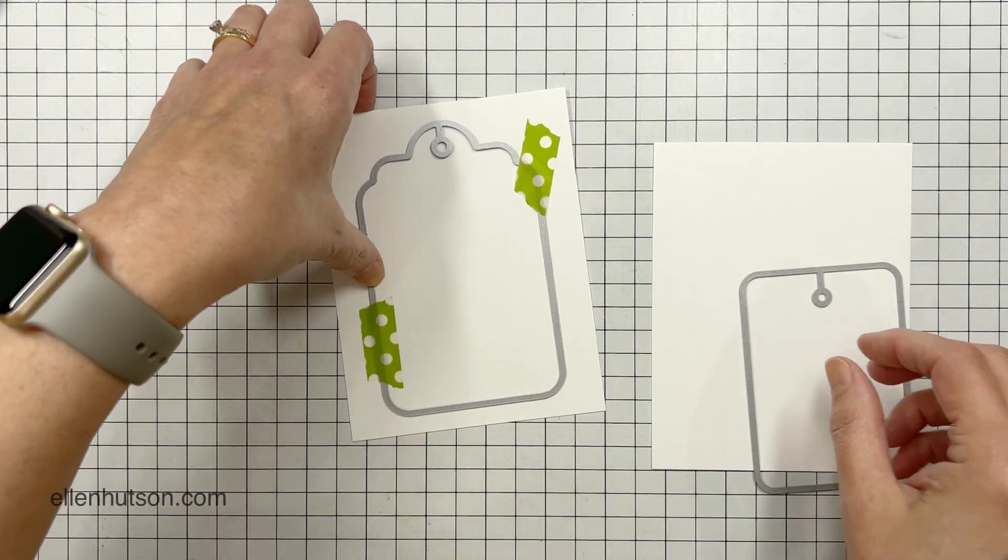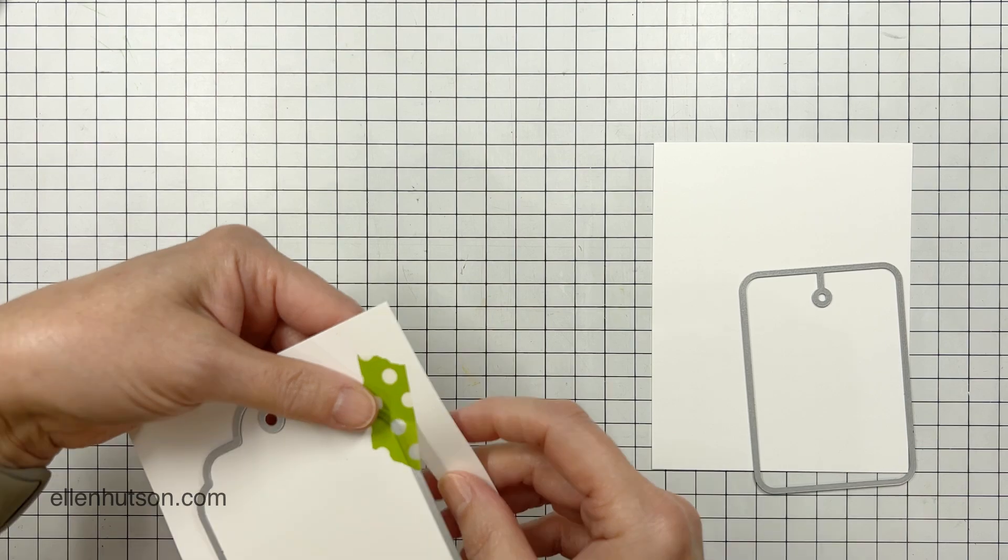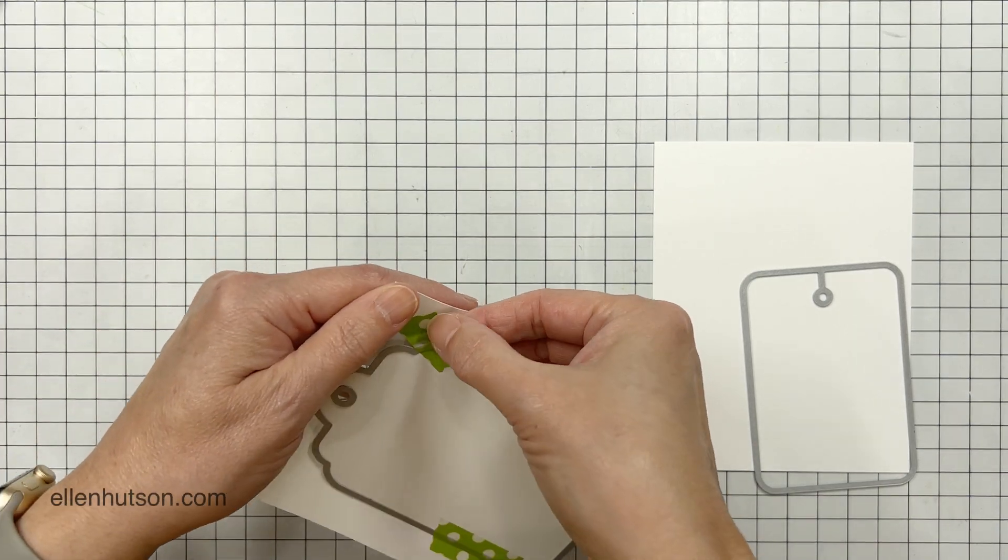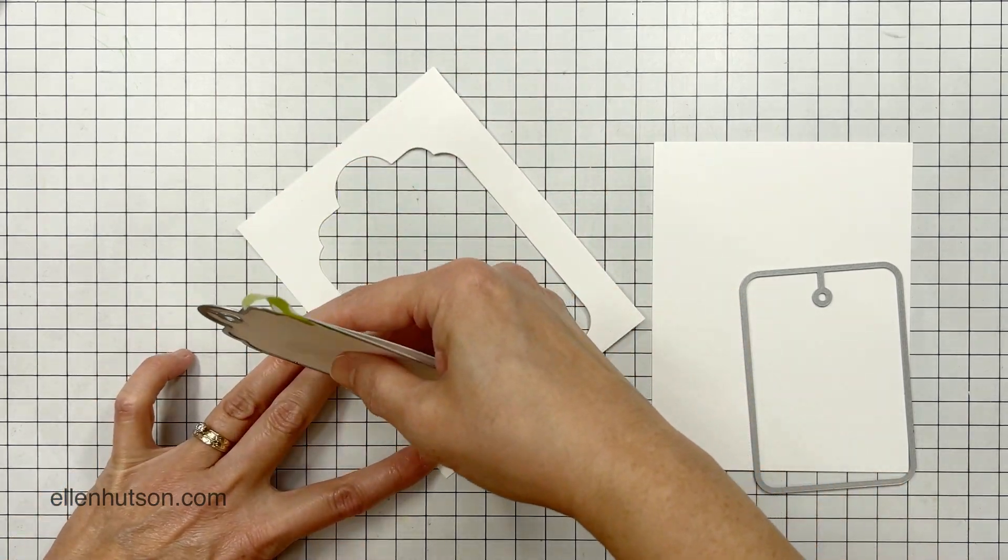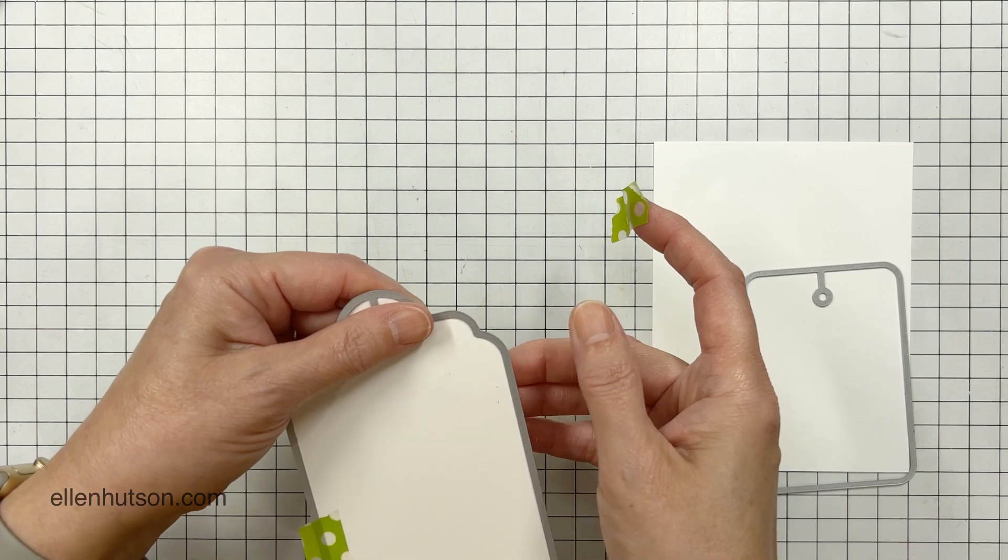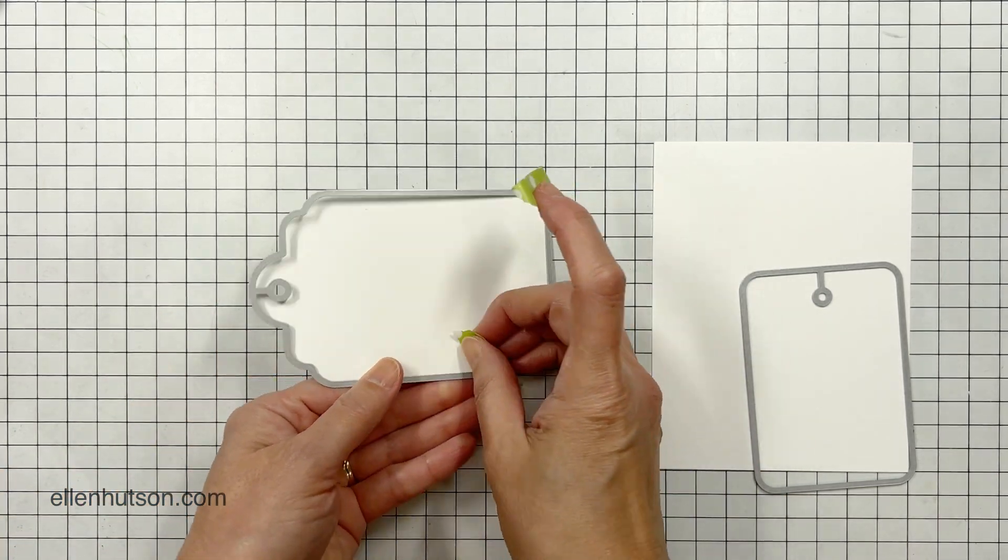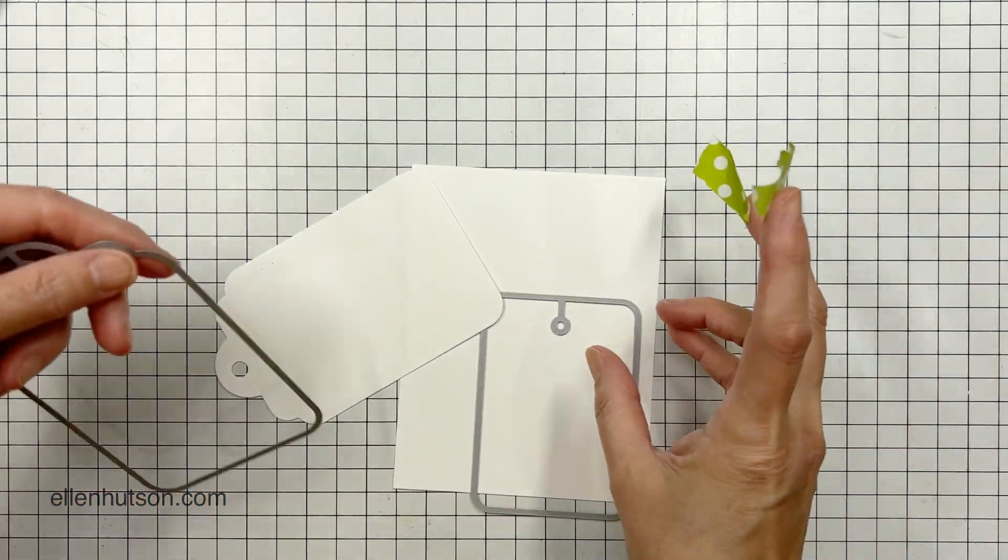So I am going to cut the largest of the tags out of Neenah Solar White, 80 pound. And I also, I didn't realize I didn't have the camera on when I did this, but I also die cut it from some Essentials Clear, Crystal Clear Plastic, and that's going to be the window. So the same shape is cut out of cardstock and also cut out of acetate. So it's kind of like the back of my shaker and the top of my shaker.